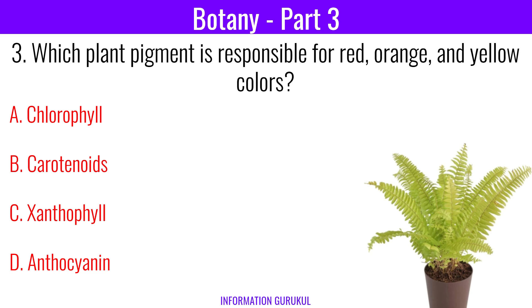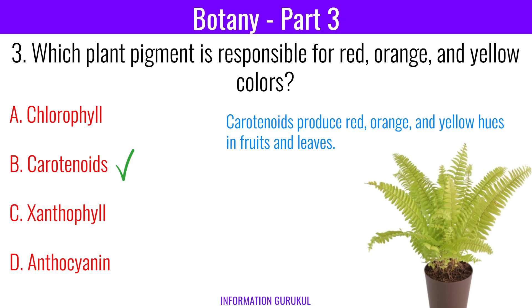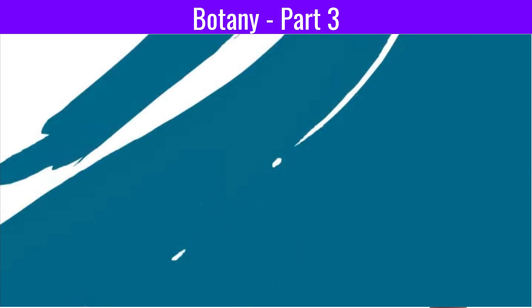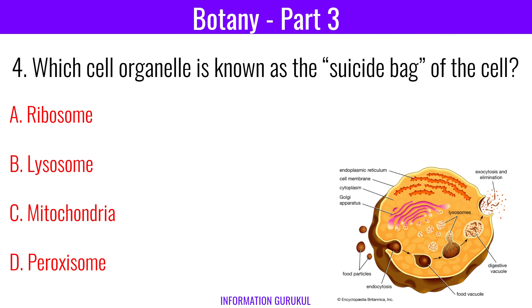Which plant pigment is responsible for red, orange, and yellow colors? Carotenoids. Carotenoids produce red, orange, and yellow hues in fruits and leaves.